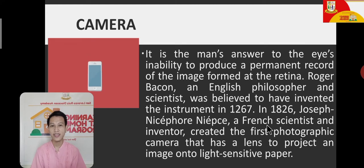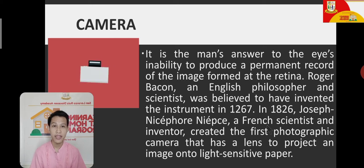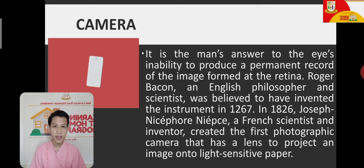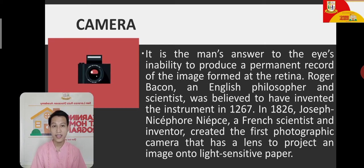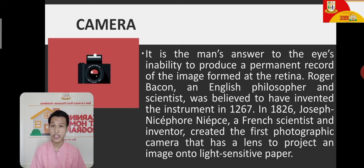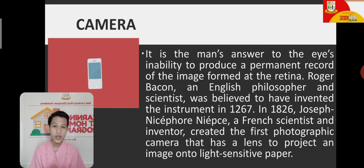Let us first discuss the camera. It is widely used today in different forms. A camera is man's answer to the eye's inability to produce a permanent record of the image formed at the retina. Our eyes are used for seeing objects, and we can store them as memories, but a camera has the ability to have a permanent record — whether it is a physical copy or a digital copy. Roger Bacon, an English philosopher and scientist, was believed to have invented the instrument in 1267.